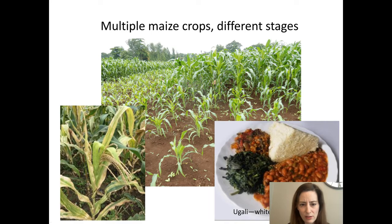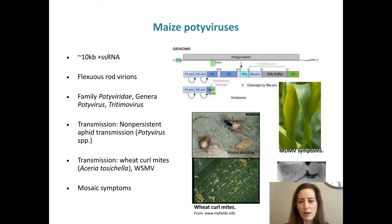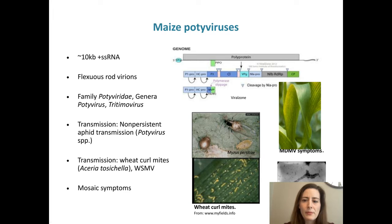What was in these plants in Kenya? Maize potiviruses were in there. These are viruses that have a polyprotein expression strategy — they produce one large polyprotein that is proteolytically cleaved into a number of different mature virus proteins. It's a single-stranded positive-sense RNA with flexuous rod virions. Potiviruses are classified in the family Potyviridae and are really ubiquitous; just about every crop has one or more potiviruses. The maize-infecting potiviruses are in two genera: potyvirus and tritimovirus. Potyviruses are aphid-transmitted; wheat streak mosaic virus, in genus tritimovirus, is transmitted by wheat curl mites.